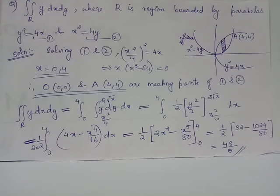Notice that the variable with non-constant limit is considered as innermost integral and the variable x with constant limits will be considered as the outer integral. When we carry out integration with respect to y, we will treat x as a constant. By usual integration and application of limits, we obtain 48 by 5 as the answer for the given double integral.